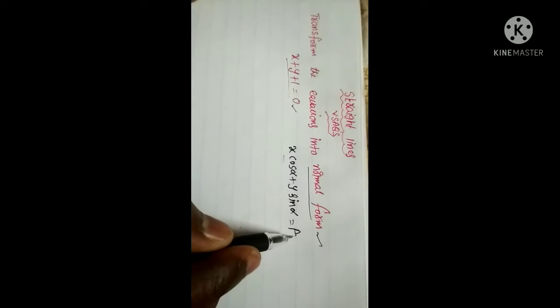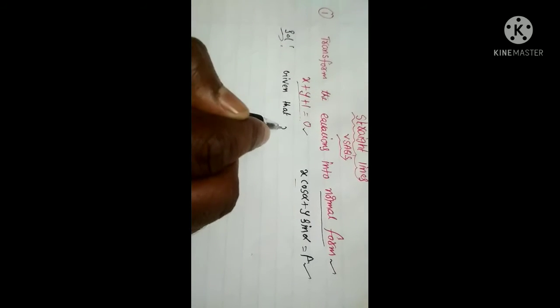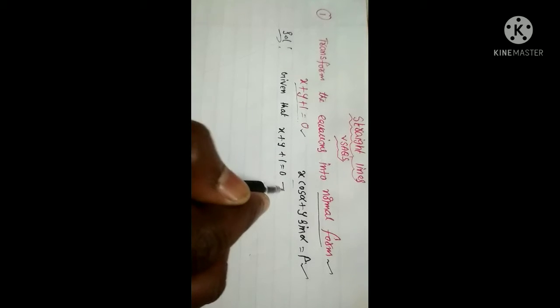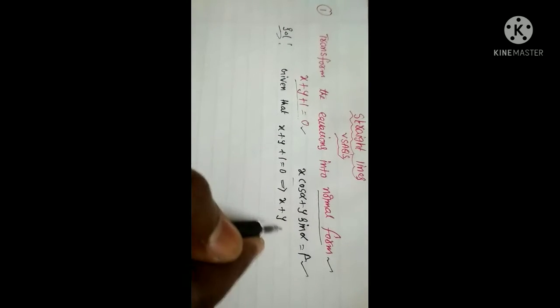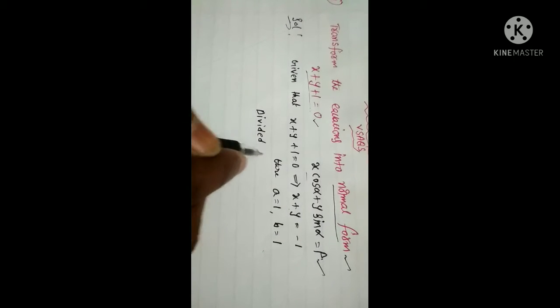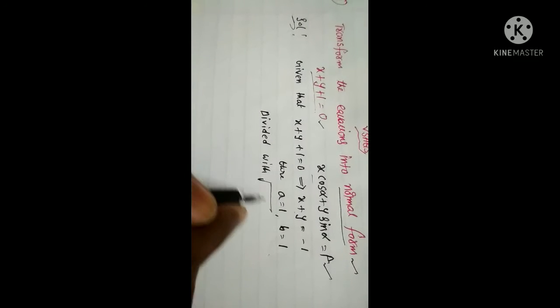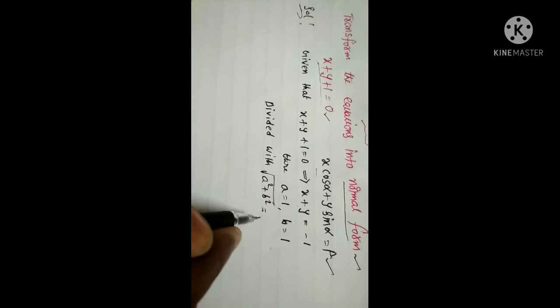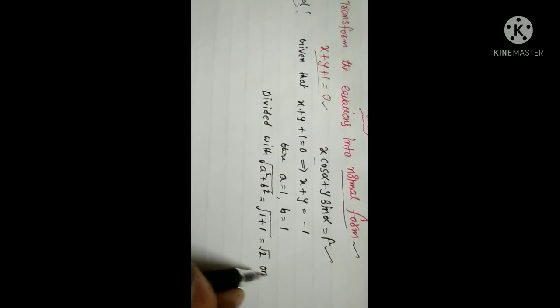We get the equation of the straight line in normal form. Given that x plus y plus 1 equal to 0, this implies x plus y equal to minus 1. Here, a equals the x-coefficient which is 1, b equals the y-coefficient which is 1. Dividing by √(a² + b²) = √(1² + 1²) = √2 on both sides.